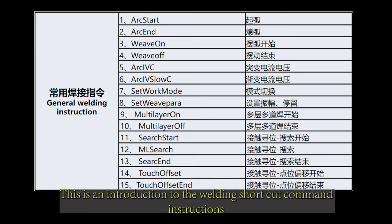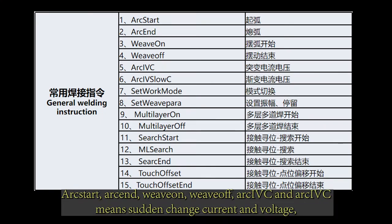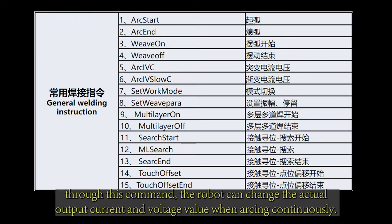This is an introduction to the welding shortcut command instructions: arc start, arc end, whip on, whip off. Arc IVC means sudden change current and voltage. Through this command, the robot can change the actual output current and voltage value when arcing continuously.